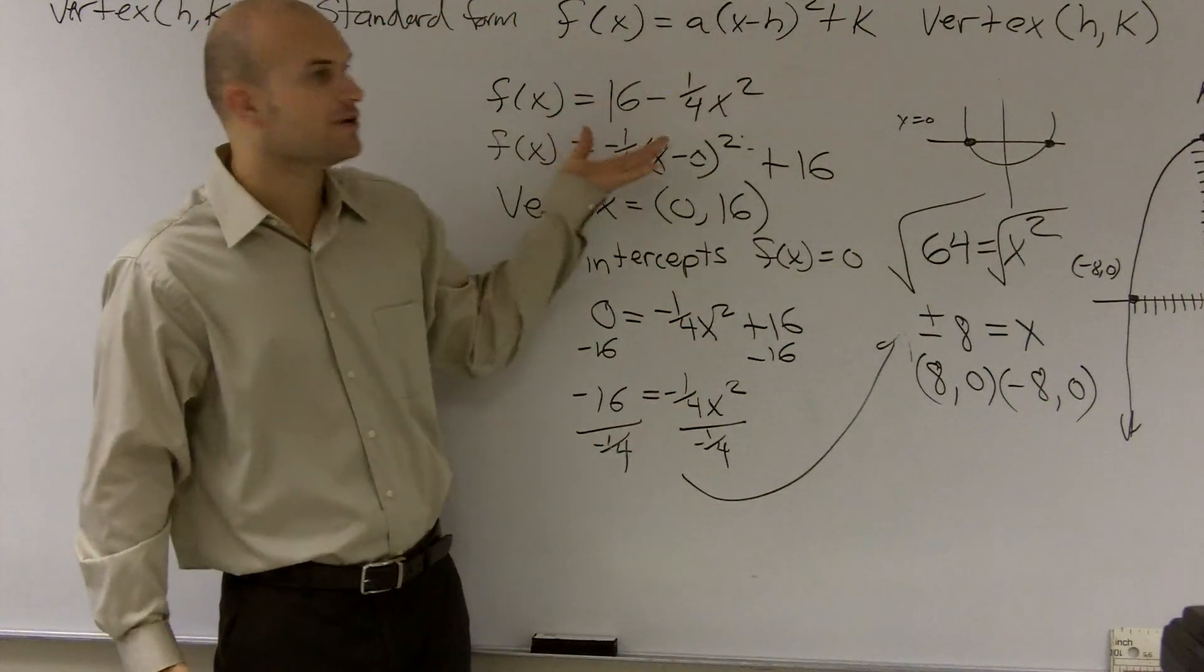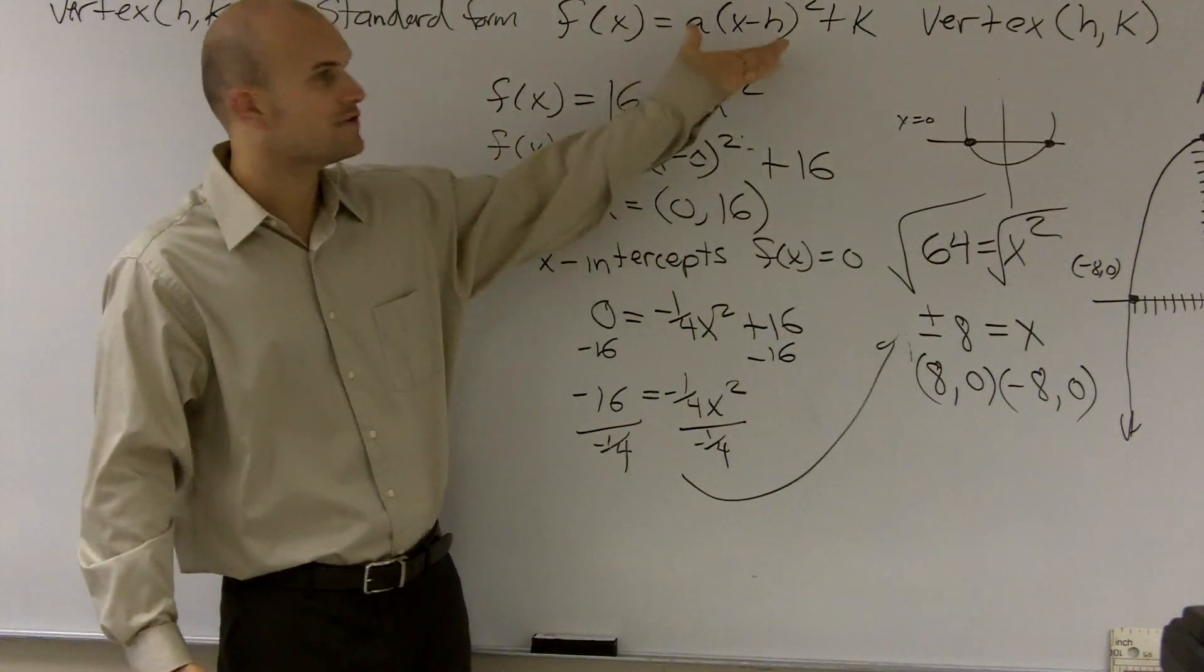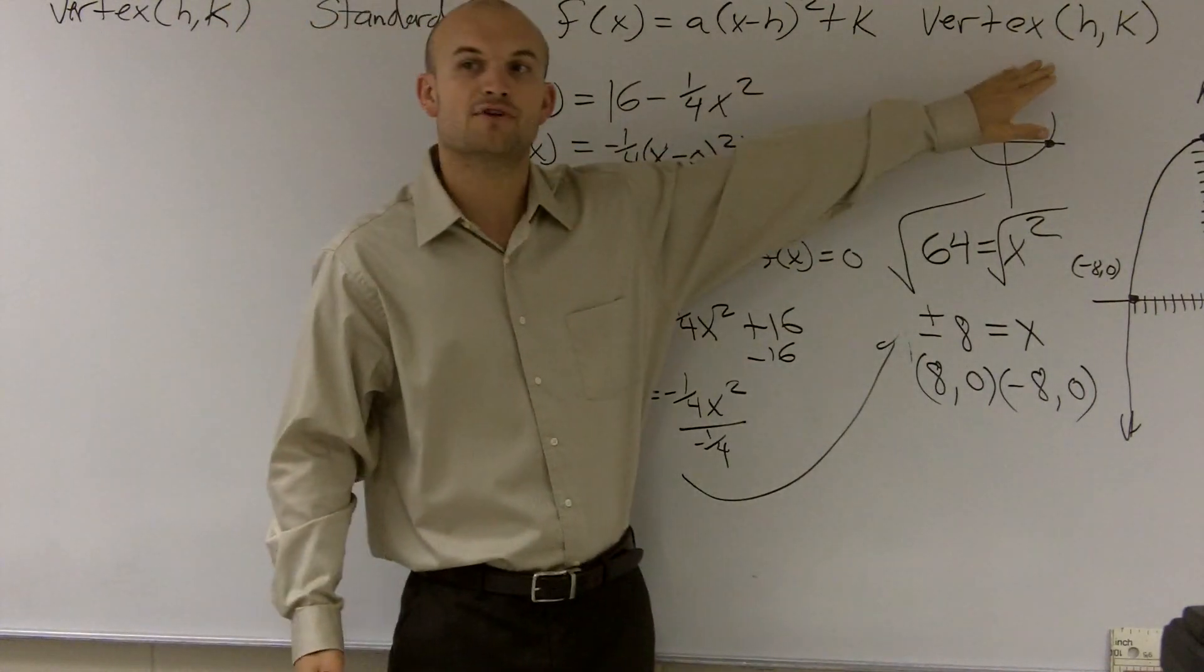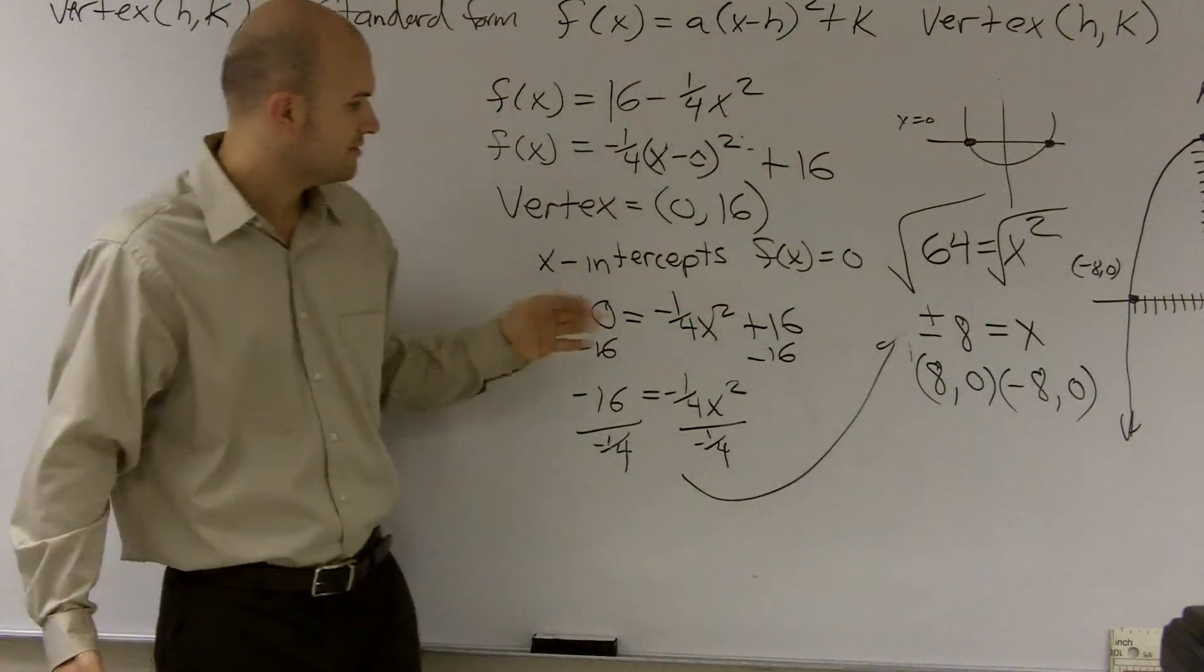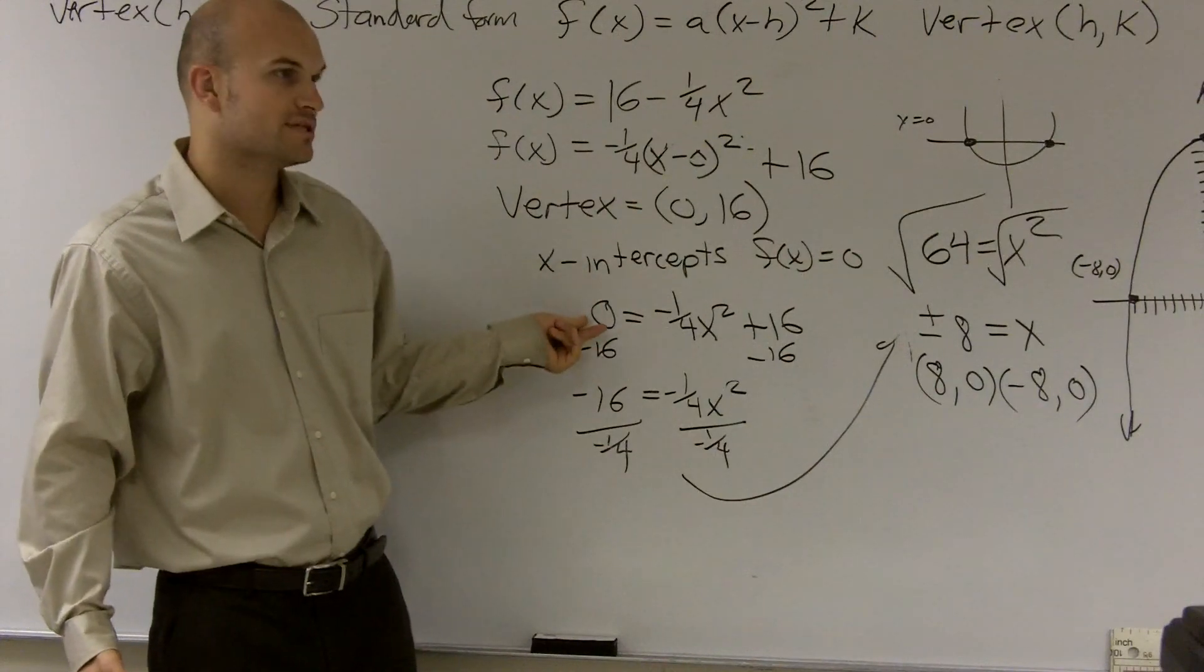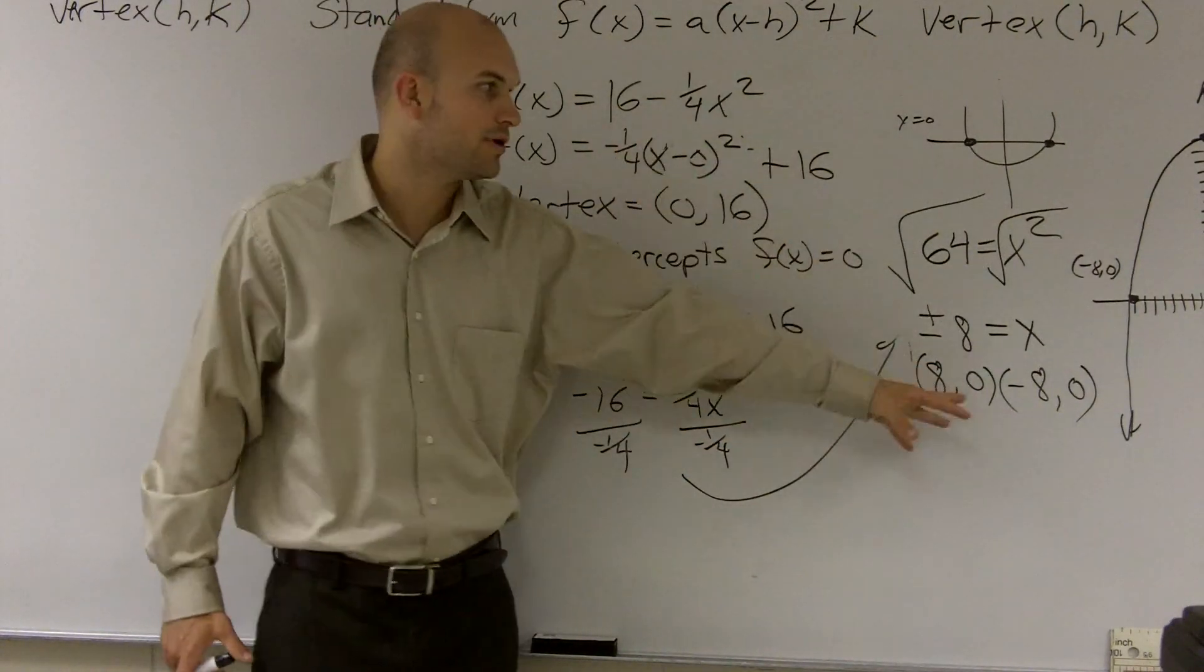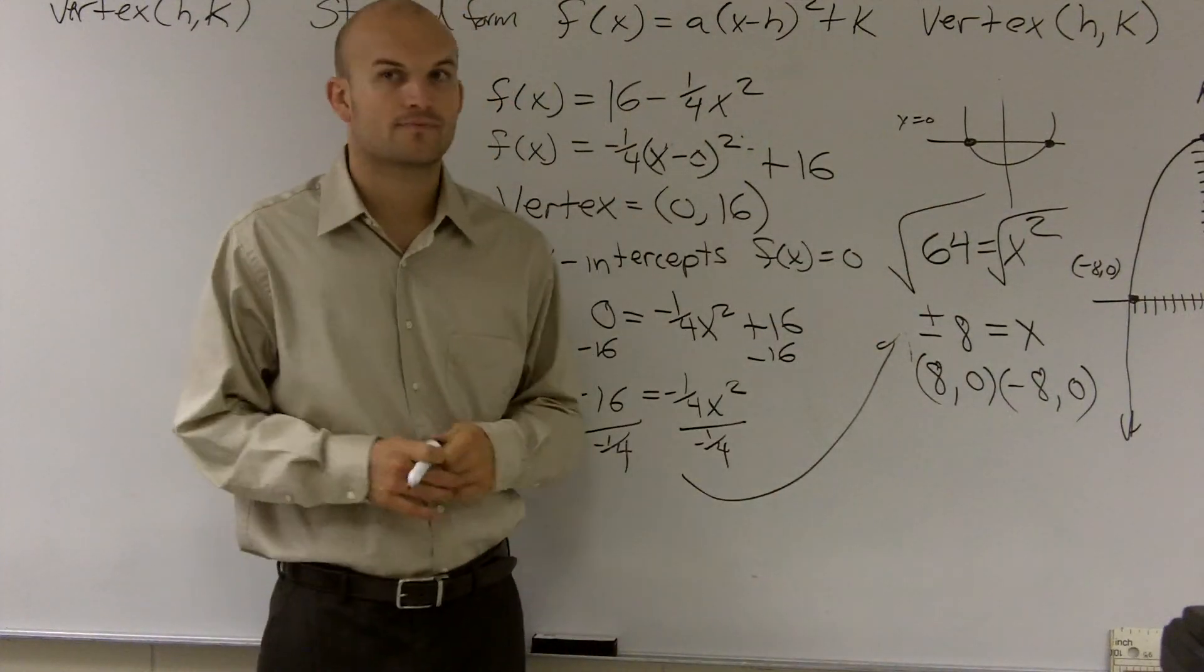So when given an equation or a function, first thing you want to do is make sure you put it into your vertex standard form, determine what the vertex is, then set your function equal to zero and solve for x to find the two x-intercepts. From those three points, you guys should be able to graph your function.